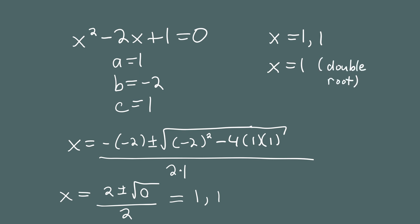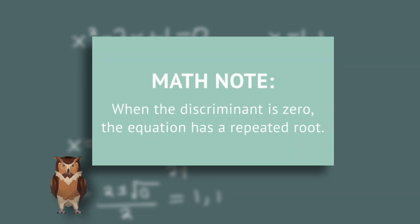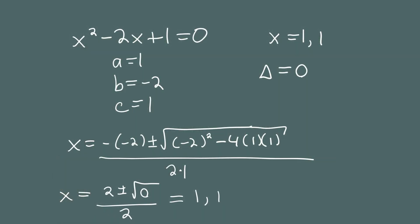Another way to say this is it has multiplicity 2. These all mean the same thing — you could say the two solutions are 1 and 1, or it's a double root, or it has multiplicity 2. For this example, the number under the radical is 0, so the discriminant is 0. The takeaway is: when the discriminant is 0, you get a repeated root — 1 and 1 in this case.